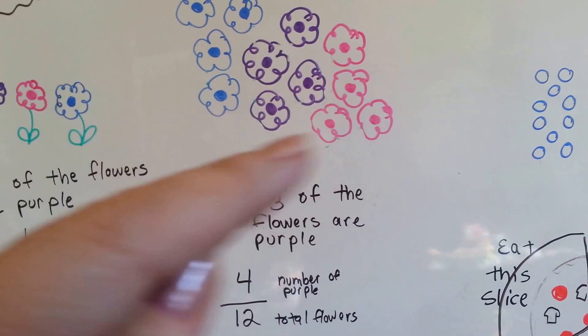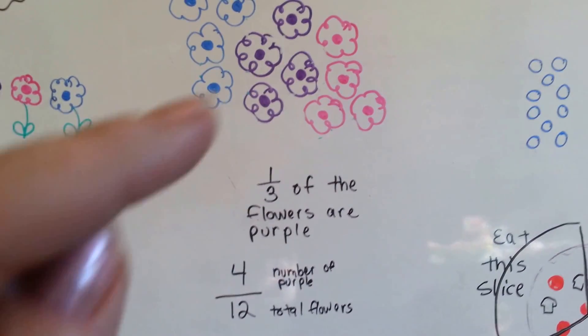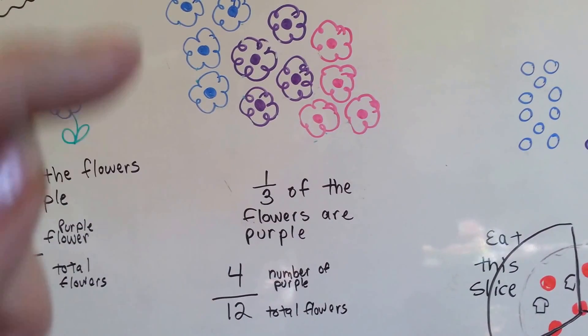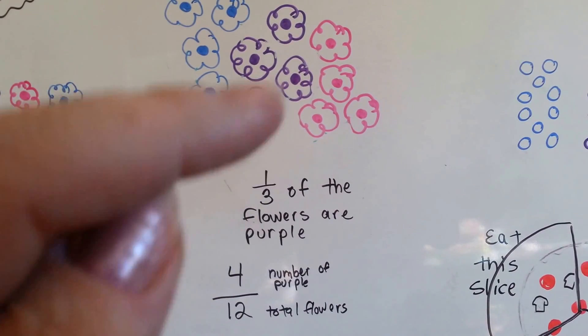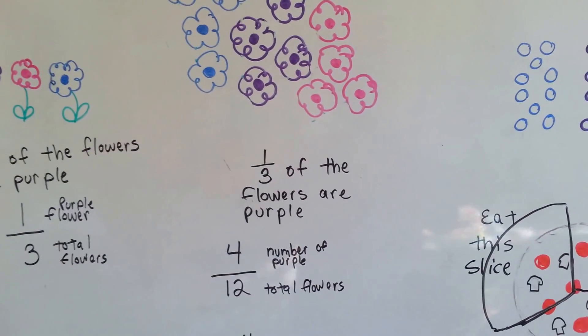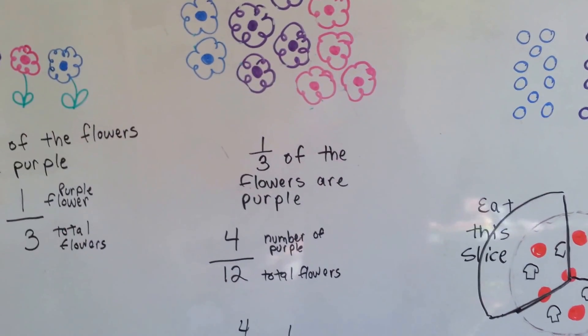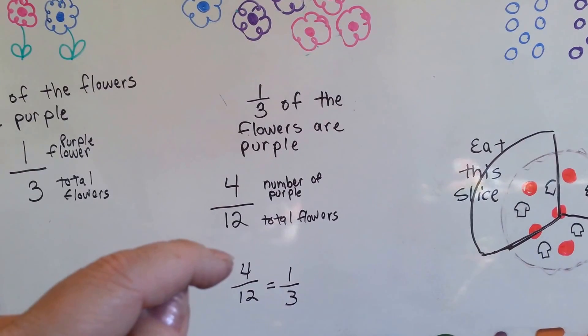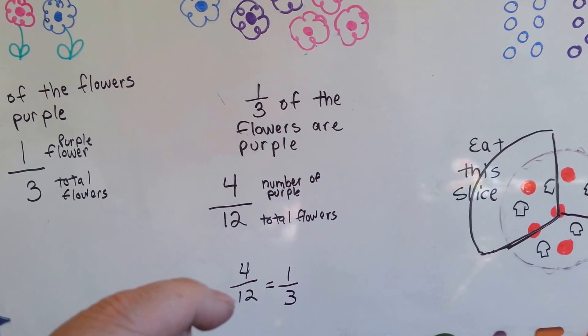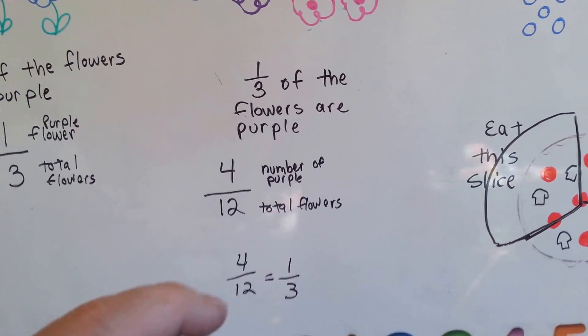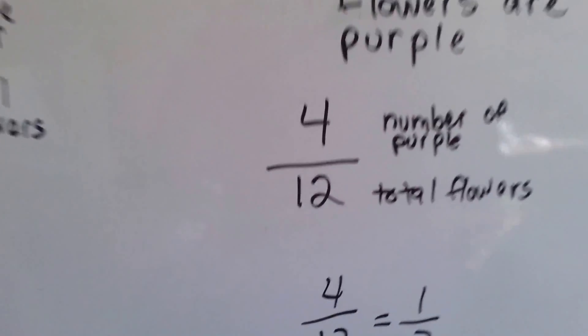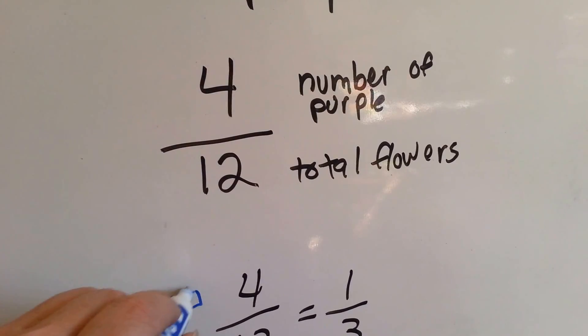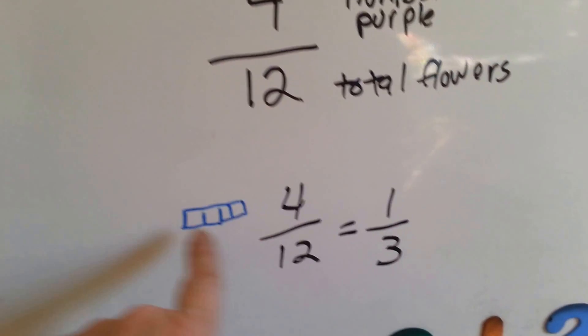One-third of them is purple. There's four flowers in a group of a total of one, two, three, four, five, six, seven, eight, nine, ten, eleven, twelve. Four of the twelve are purple. Four fits into twelve three times. One of these fours has three fours that can fit into this twelve. Four of the twelve. You've got four, four of the twelve.